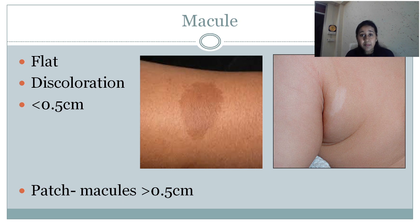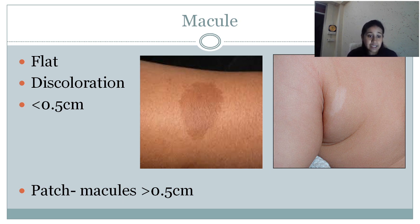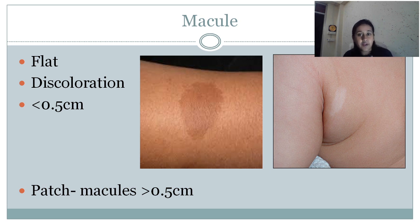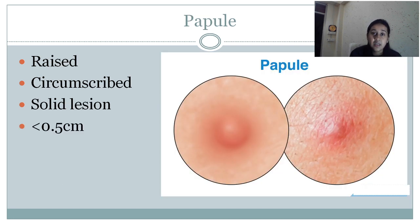What is a patch? These are similar to macules, but the only difference is the size. The macule is less than 0.5 cm and a patch is more than 0.5 cm. So both lesions look similar — the only difference is the size.